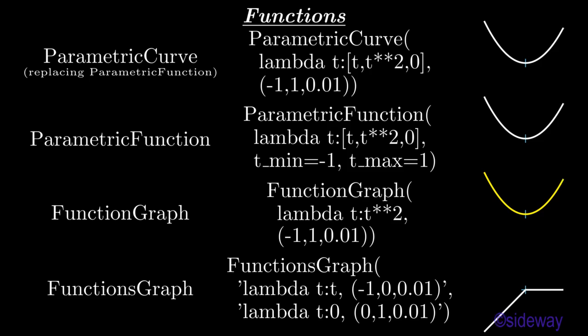A functions graph vectorized mathematical object is used to generate a group function graph by specifying a group of ordered function graph argument sets.